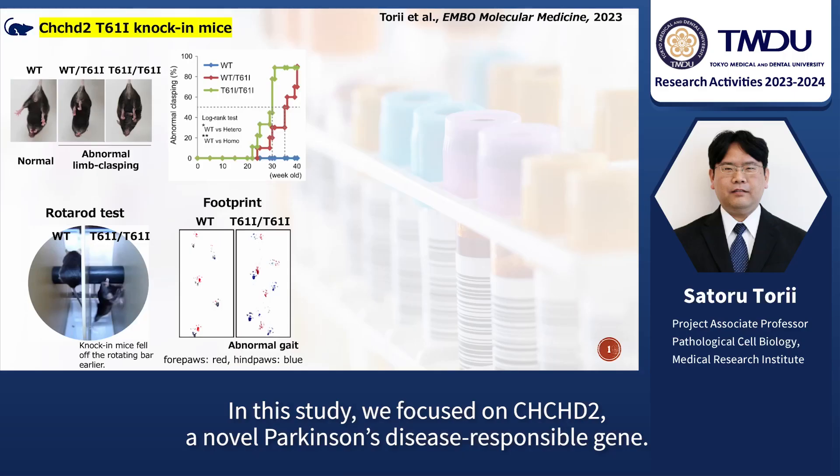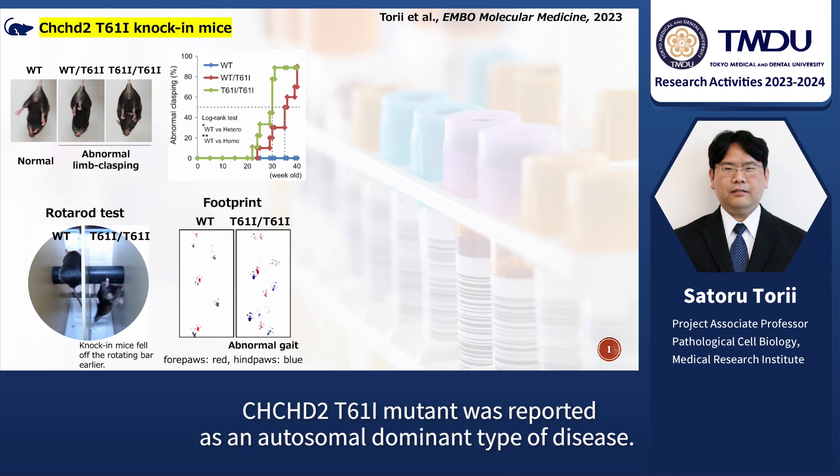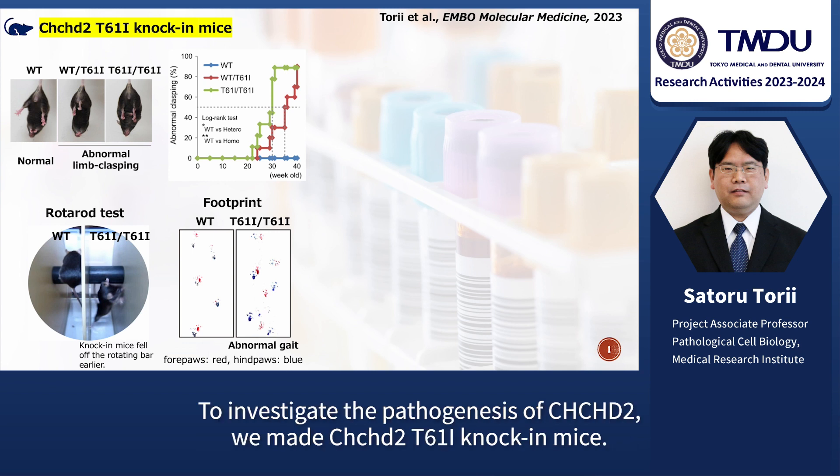In this study, we focused on CHCHD2, a novel Parkinson's disease responsible gene. The CHCHD2-T61I mutant was reported as an autosomal dominant type of disease. To investigate the pathogenesis of CHCHD2, we made CHCHD2-T61I knock-in mouse.